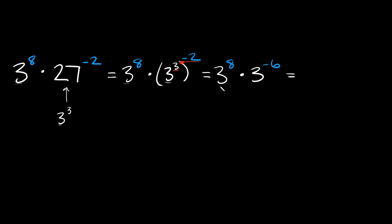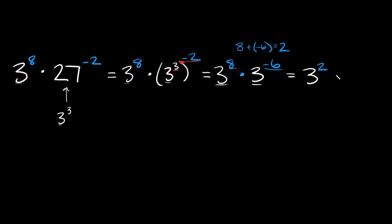This is equal to — again, we have the same base, a three and a three, so just keep the three. When multiplying with the same base, you add the exponents: eight plus negative six is equal to positive two. So your answer is three raised to the second power, or three squared. And three squared is simply equal to nine.